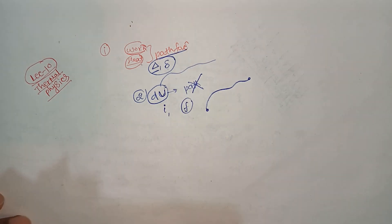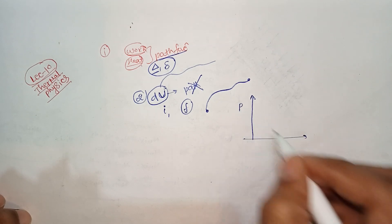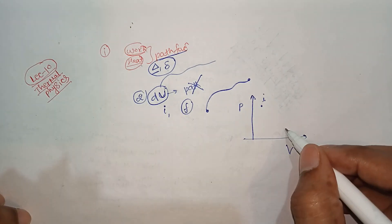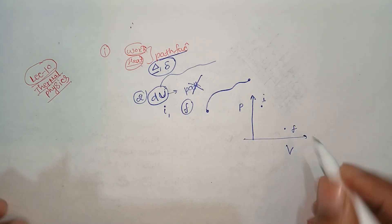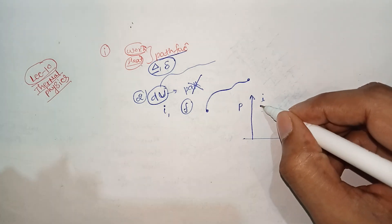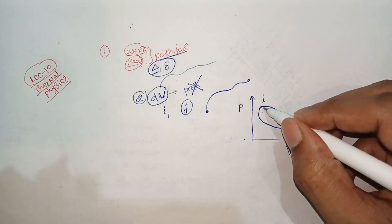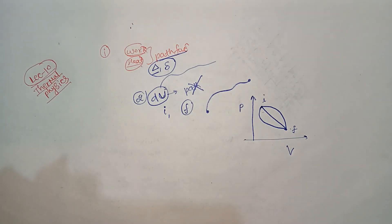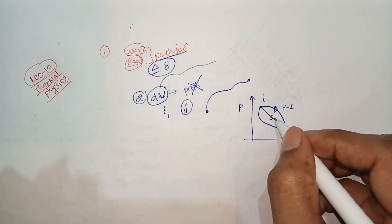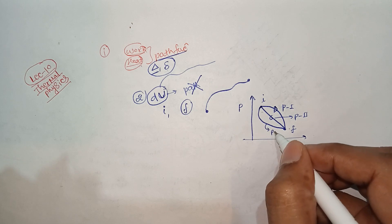Now let's build the PV graph — pressure and volume. This is the initial position and the final position. Between the initial and final positions, there can be infinitely many paths. We consider three such paths: process number one, process number two, and process number three.